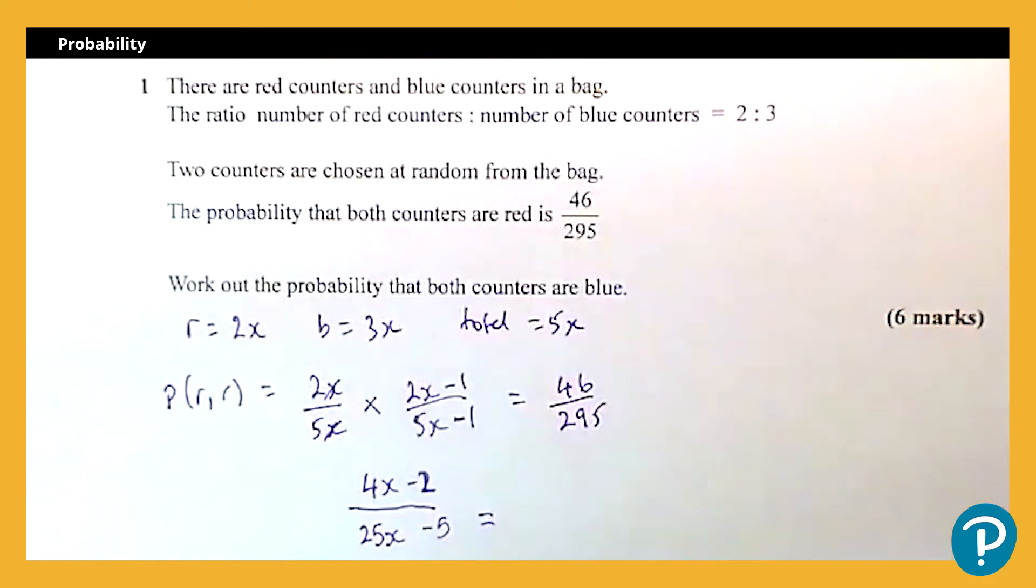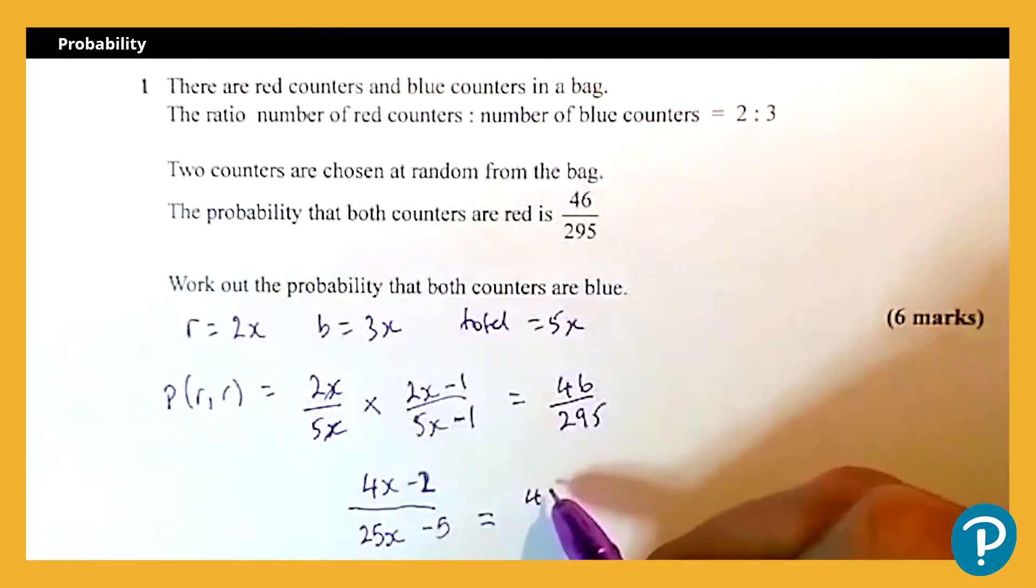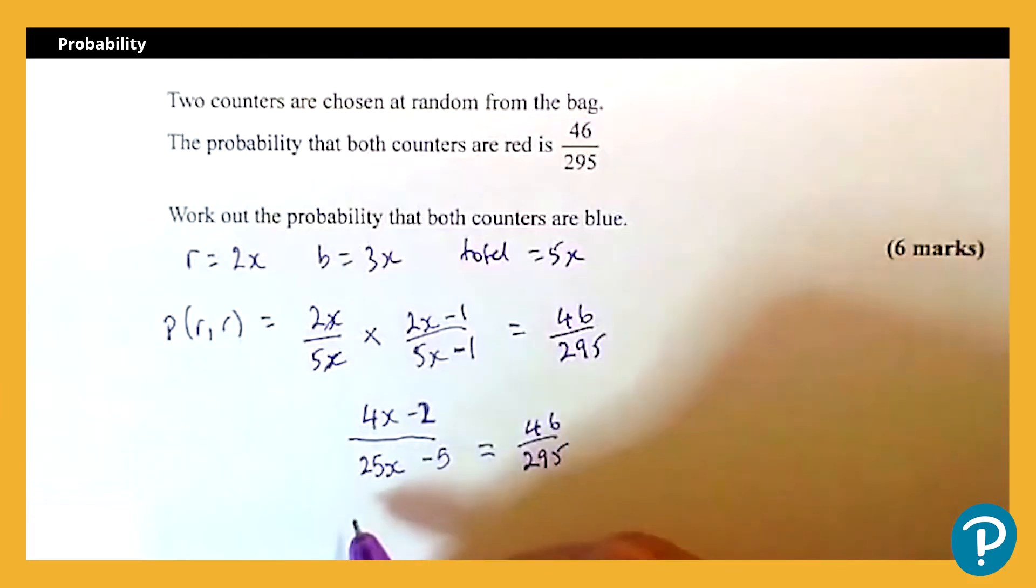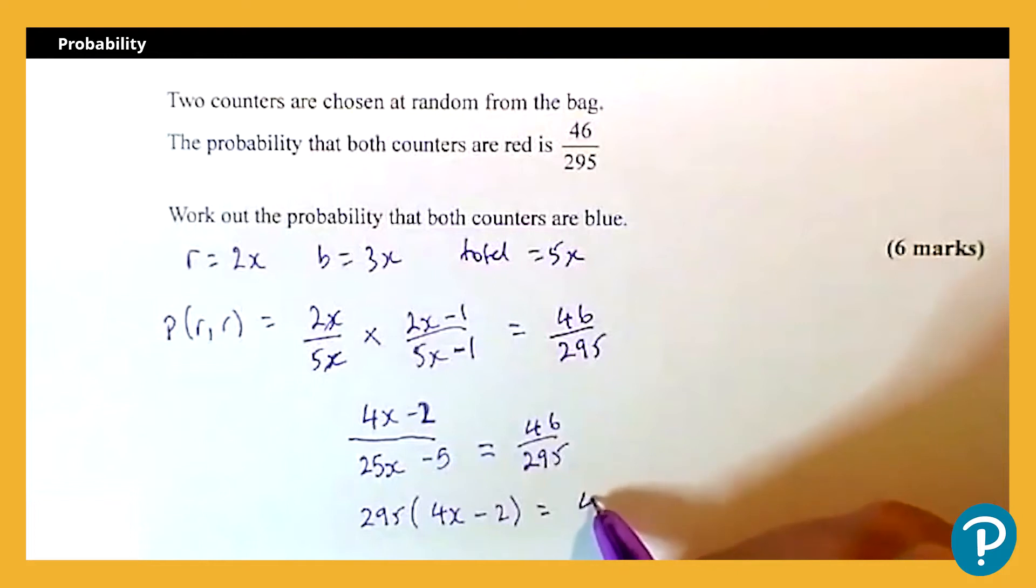And we know that that's going to be equal to 46 over 295. Now I need to sort these fractions out, so I'm going to multiply by 295, I'm going to multiply by 25x minus 5. So that would give me 295 lots of 4x minus 2 and 46 lots of 25x minus 5.